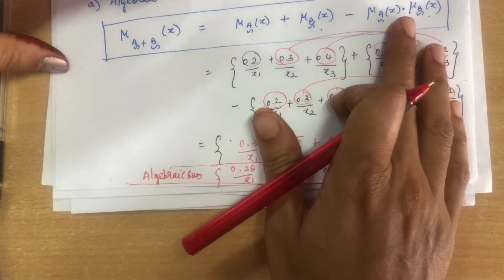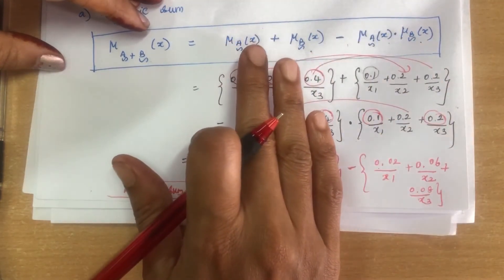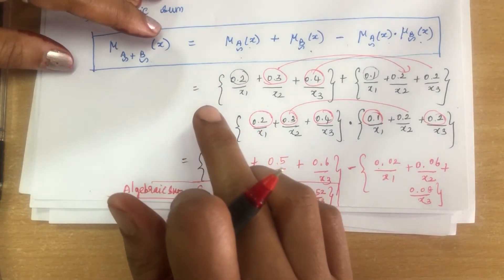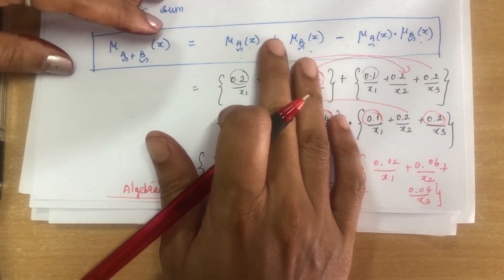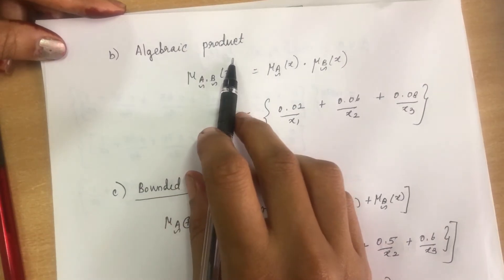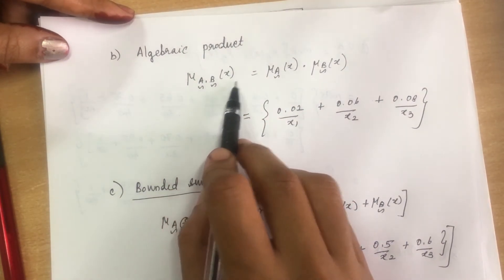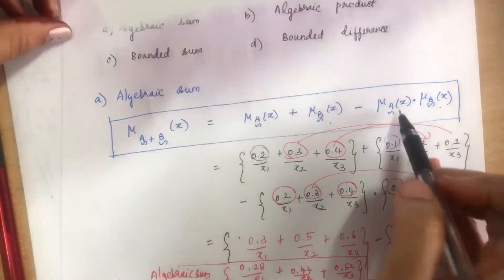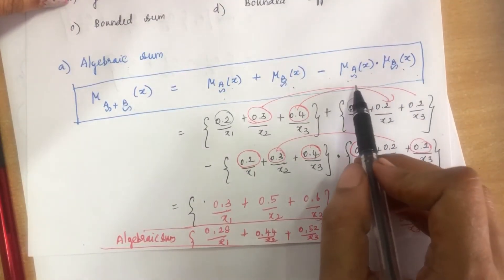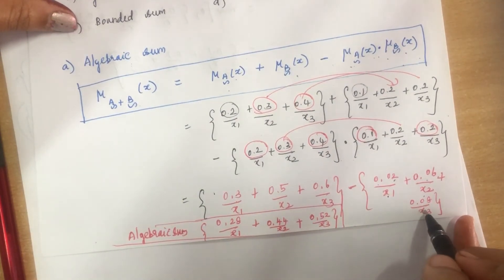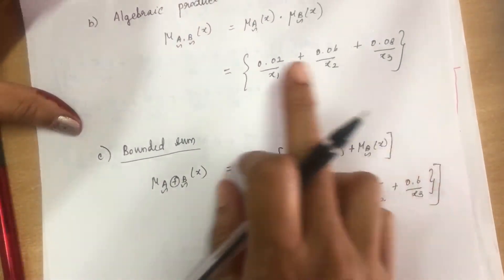Note that algebraic sum is different from union — union uses maximum, but algebraic sum uses addition. Algebraic product μ(A·B)(x) = μA(x) × μB(x). This is simply the product already computed: 0.02/X1 + 0.06/X2 + 0.08/X3.